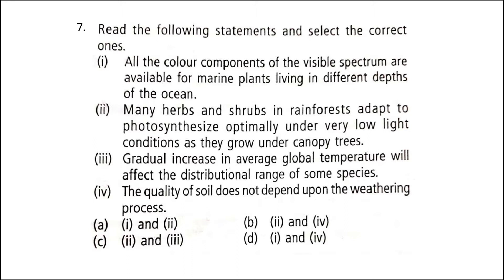In tropical rainforests, vegetation shows stratification — the grouping of plants into two or more well-defined layers depending on height: tall trees, medium-sized trees, small trees, bushes, herbs, etc. Shrubs and herbs adapt to stratification and photosynthesize optimally under low light conditions. Temperature governs physiological function and geographical distribution of many plants and animals; any change in temperature will affect their distribution. Weathering of rocks into fine powder occurs due to atmospheric changes, mechanical forces, chemical changes, or biological breakdown, and it affects the quality of soil.